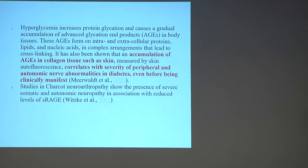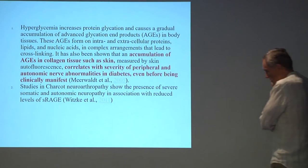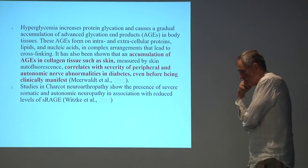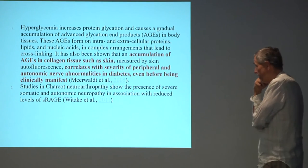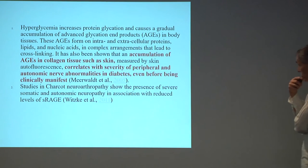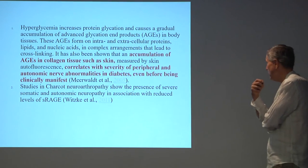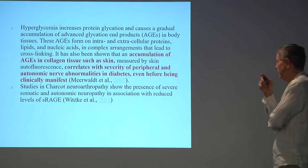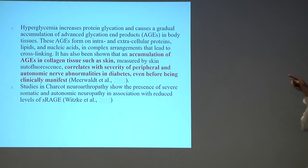Accumulation of advanced glycation end products correlates with the severity of peripheral autonomic nerve abnormalities, even before diabetes has a clinical manifestation.